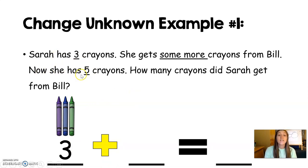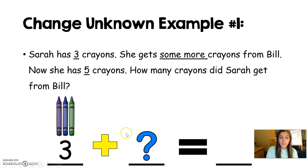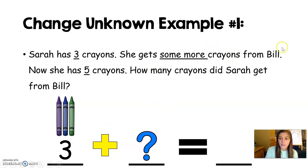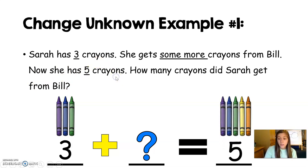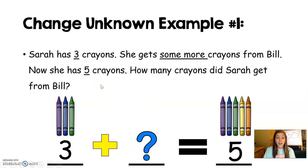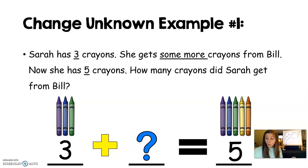Now she has five crayons. So we know at the end she has five crayons. But did they tell us how many more crayons Bill gave her? All they said was she gets some more crayons from Bill — they didn't tell us how many she got. So I put a question mark there because we don't know how many crayons Bill gave her. Now she has five crayons at the end. It asks us how many crayons did Sarah get from Bill — that is our change unknown that we need to find out.